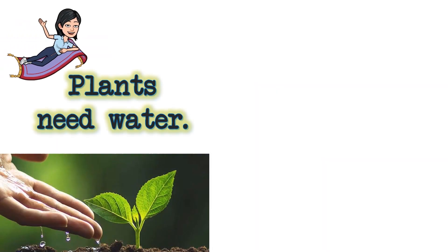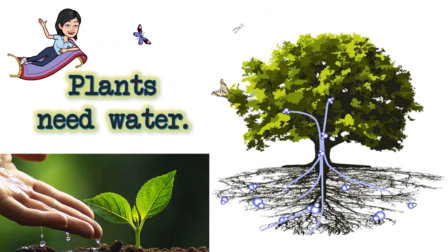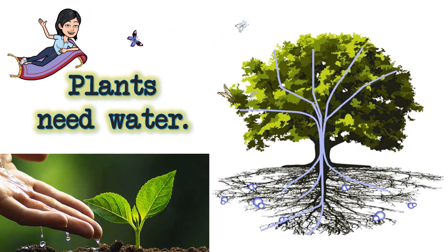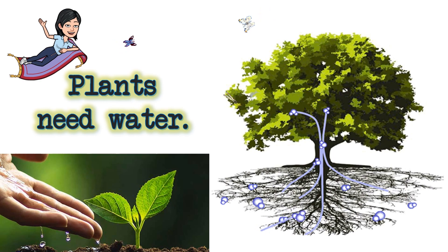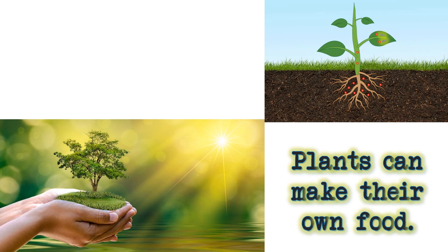Plants need water. They get it from the soil through their roots, and water travels up to the leaves where the plants make their own food. Unlike humans and animals, plants can make their own food using carbon dioxide in the air and water, with the help of sunlight. This process is known as photosynthesis.